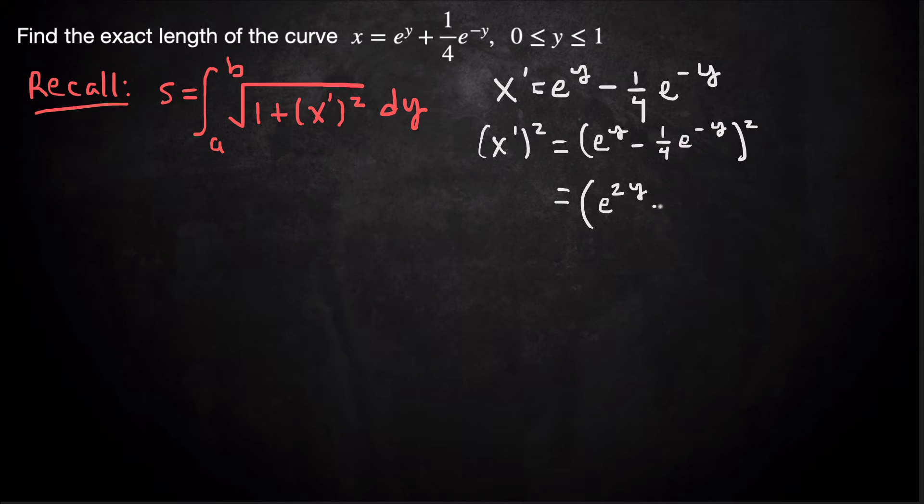Multiply and double, I'm going to get -2/4 e^0. And then square the last term, so plus 1/16 e^(-2y).